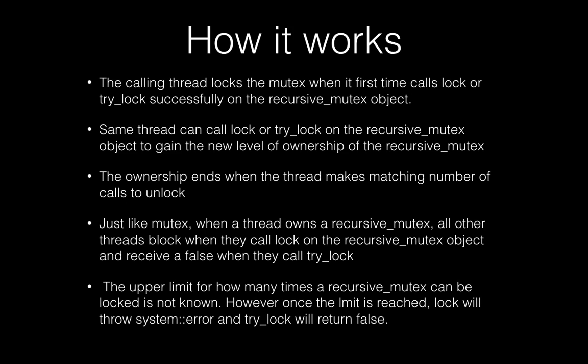Just like mutex, when a thread owns a recursive mutex, all other threads will be blocked if they try to call lock on the recursive mutex object, and if any other thread calls try_lock they will get a false return value. There is an upper limit on how many times you can call lock on a recursive mutex — once that limit is reached, lock will throw a system error and try_lock will start returning false.